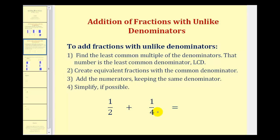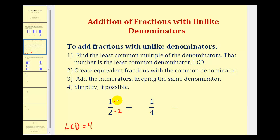So if we have one-half plus one-fourth, the first step is to identify the least common multiple of two and four, which is the smallest number divisible by both two and four, which would be four. So we want both fractions to have a denominator of four. This one already has a denominator of four, this one has a denominator of two. Since two times two is equal to four, we can multiply this denominator by two, as long as we do the same to the numerator. Multiplying the numerator and denominator by two is equivalent to multiplying by one.